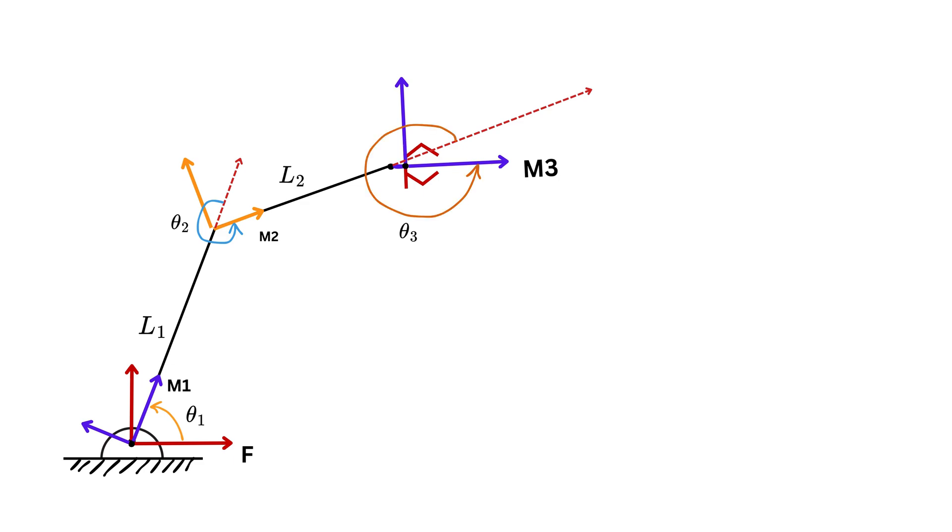After this is done, now if there is an object placed at some position, small x, with respect to the end effector or M3 frame, and if we have the position of the same object as big X in fixed frame, then forward kinematics is all about finding big X given small x and other robot parameters such as length of the links and their orientations like all theta one, two, and three in this case.